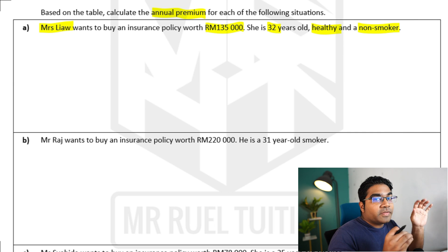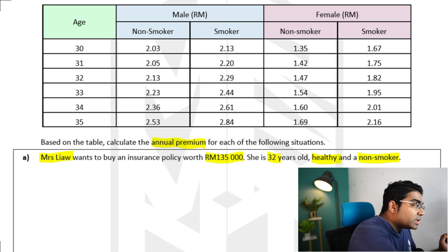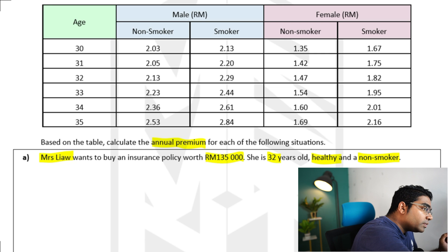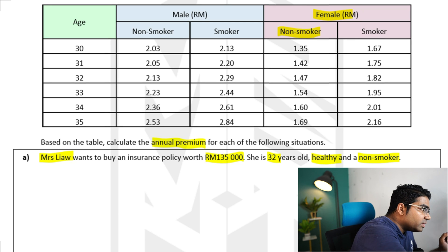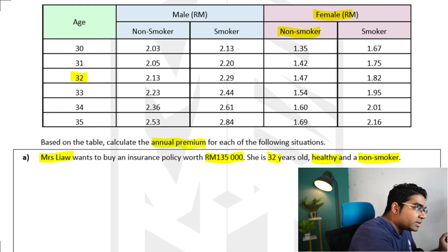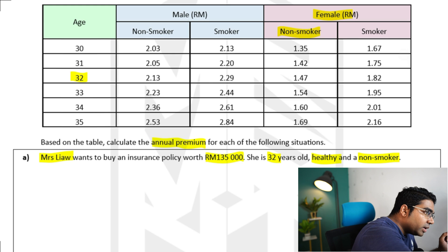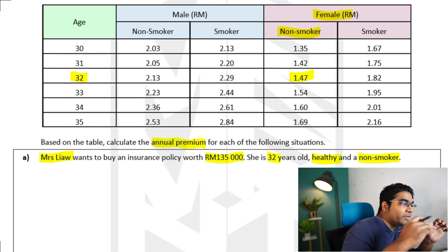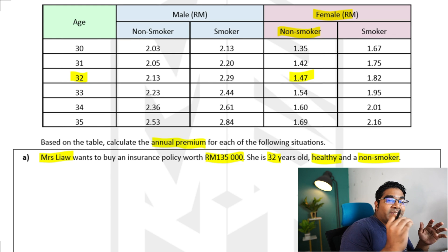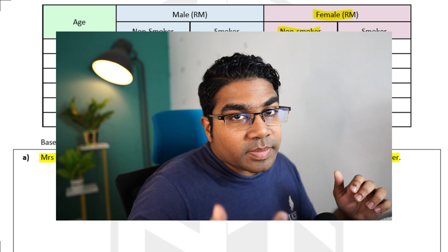Let's look at the premium rate that fits all these criteria. Mrs. Liao is a female, she is a non-smoker, and she is 32 years old, which makes her premium rate 1 ringgit and 47 cents per thousand ringgit face value.